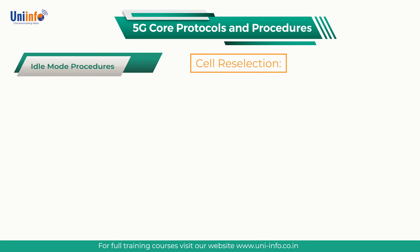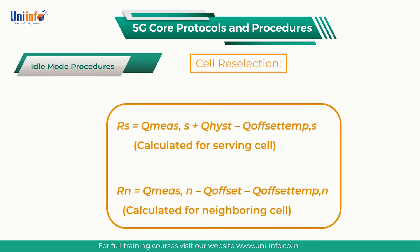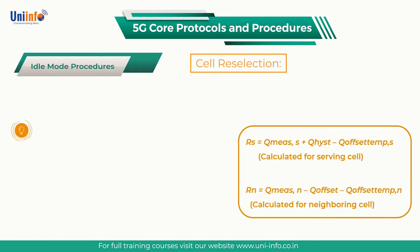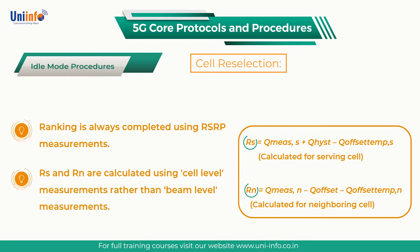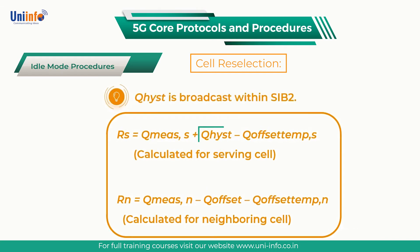The UE ranks all cells which satisfy the cell selection S criteria. Ranking is completed using the R criteria which is shown on the screen. Ranking is always completed using RS-RP measurements. RS and RN are calculated using cell-level measurements rather than beam-level measurements.